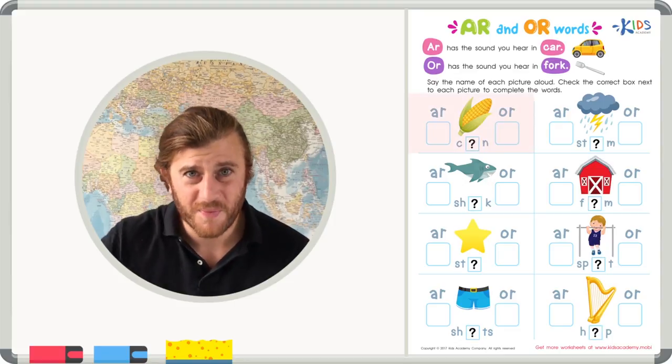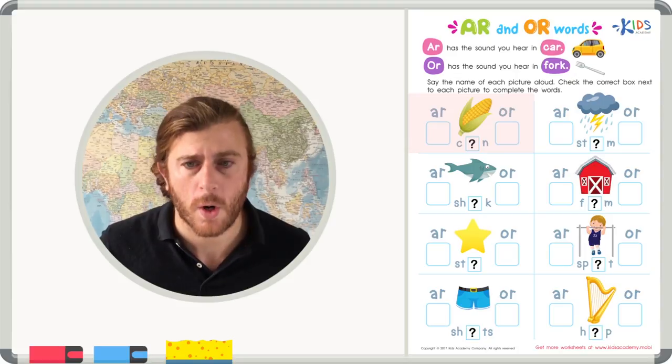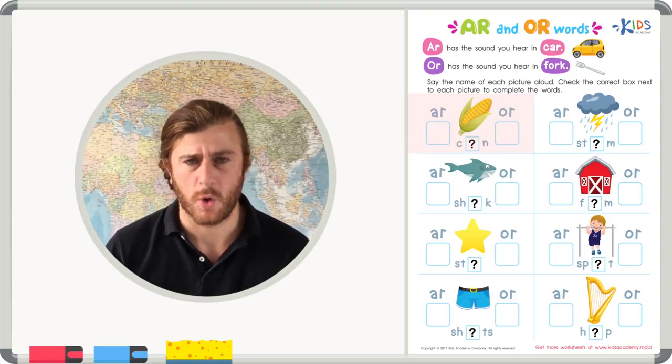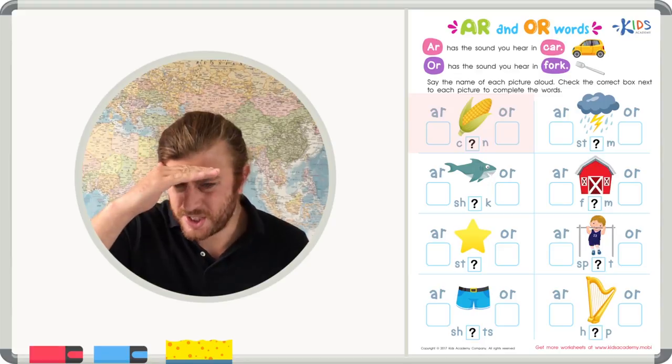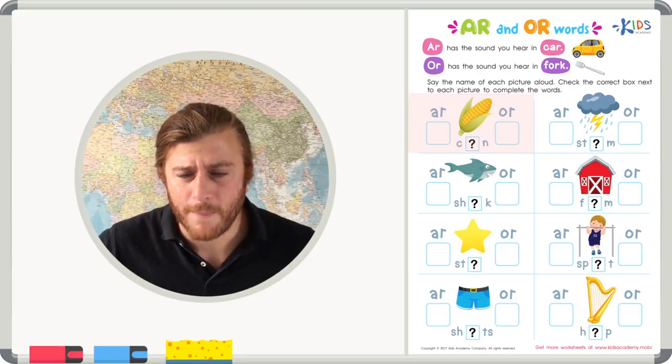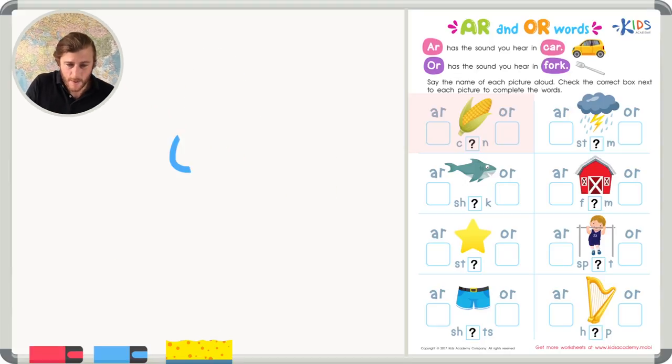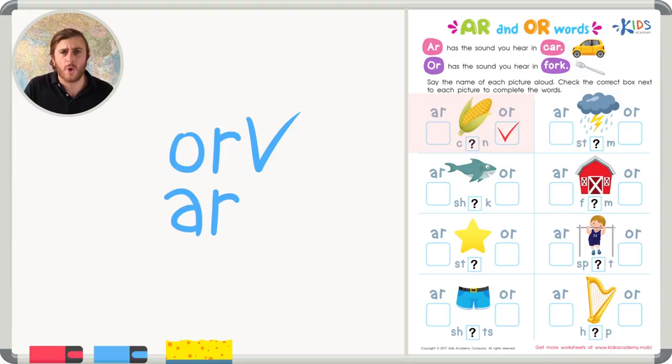Let's take a look at the first picture. I see corn. So let's sound out corn using A-R and O-R and see which one sounds right. Co-o-o-orn. Just on my first sound, I think it's going to be O-R. But let's try both sounds to see which one is a better fit. We have ca-a-a-arn or co-o-orn. Corn. I definitely hear the O-R sound. C-o-r-n. Corn. Let's try this same strategy of sounding out O-R and A-R for the rest of our words.